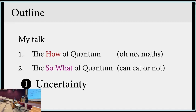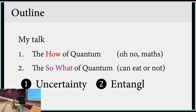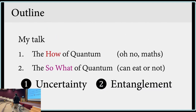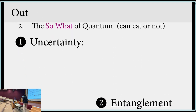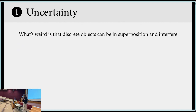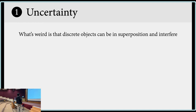Just now Clive mentioned that there are two aspects to quantum mechanics that are quite fundamental to it: uncertainty and entanglement. What I really want to do in my talk is to show you exact applications of these two principles and how we can use them. What's really weird in quantum uncertainty is that it is discrete objects that can be in superposition and interfere with each other.